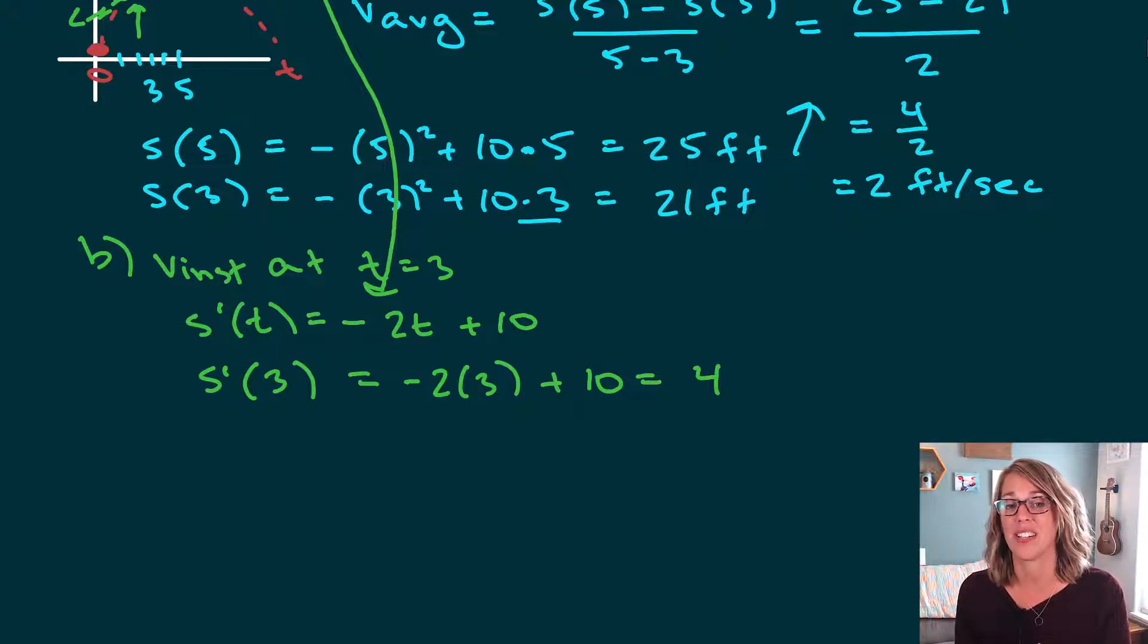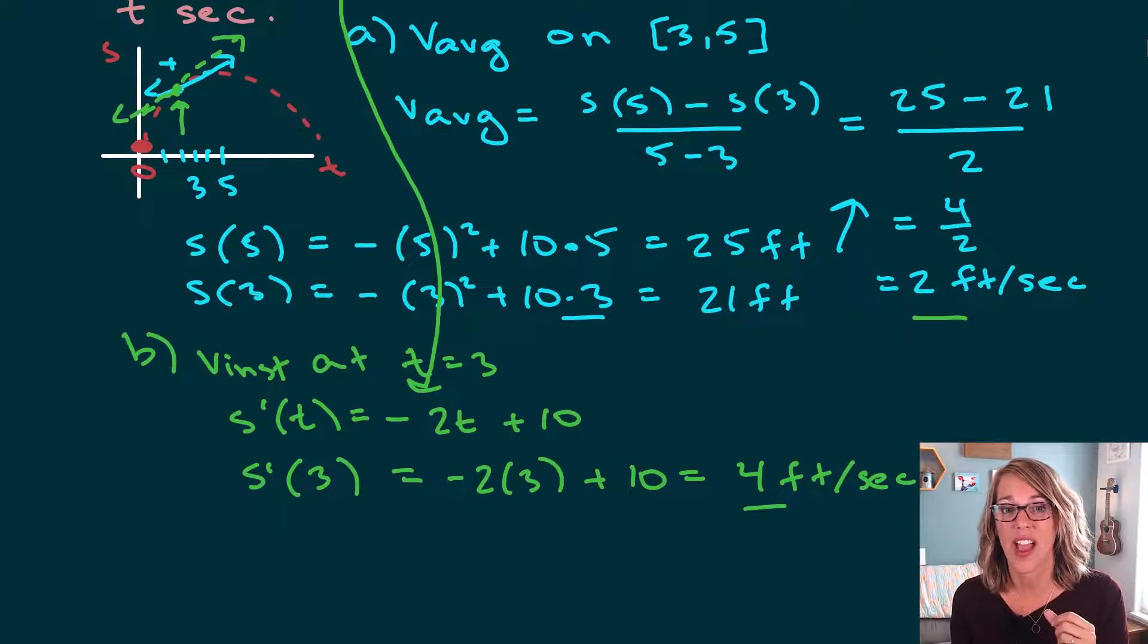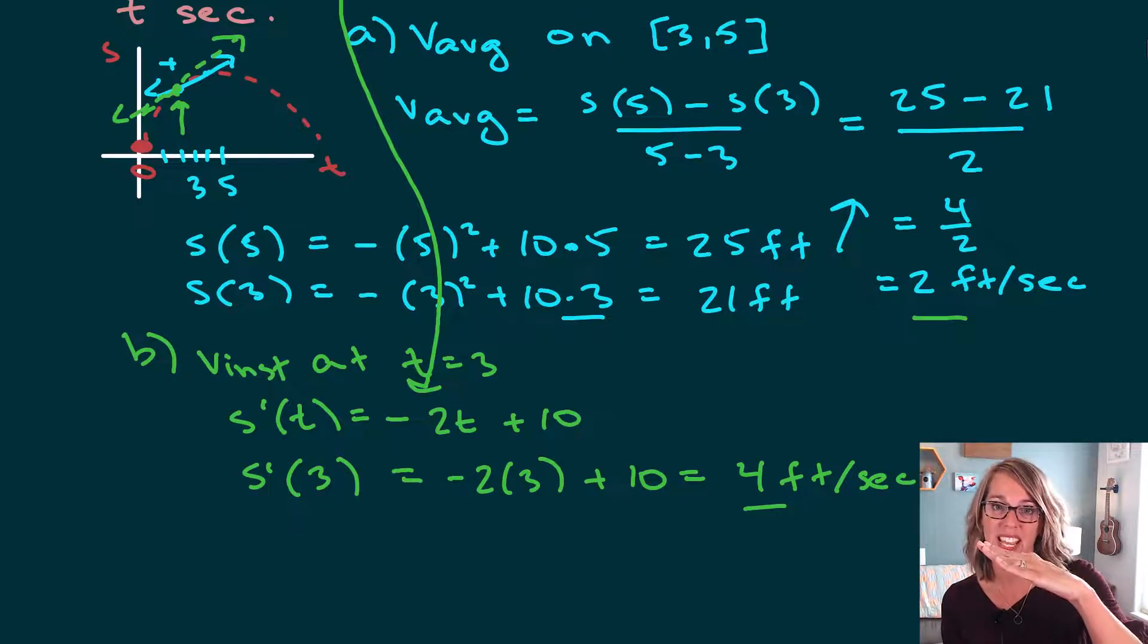Which is equal to four. This is again a velocity. So it's a speed. This is going to be four feet per second. Notice how four is steeper than two. If we take a look back at our graph, sure enough, the tangent line that's in green has a steeper slope than that secant line, the line that goes through the points at three and at five.